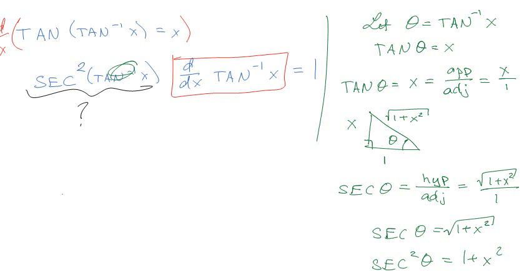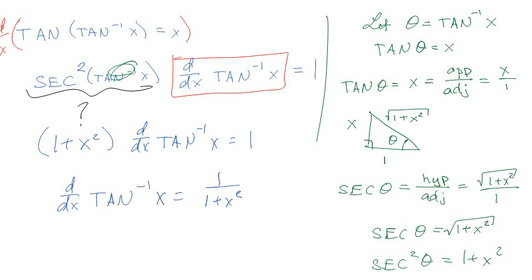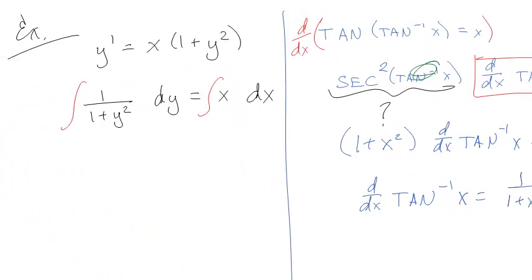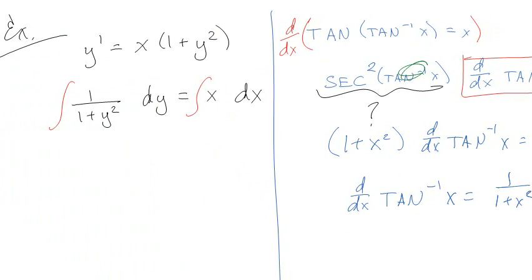So secant squared of tangent inverse of x is 1 plus x squared times the d/dx of tangent of x. You're like, I really don't care. But you should care, because this is kind of fun, and you got to make fun of me a minute ago because I didn't remember the derivative of tangent. Like this equals 1 over this. So look, you did stuff. So now I have proven to myself that the integral of 1 over 1 plus x squared is, in fact, inverse tangent.